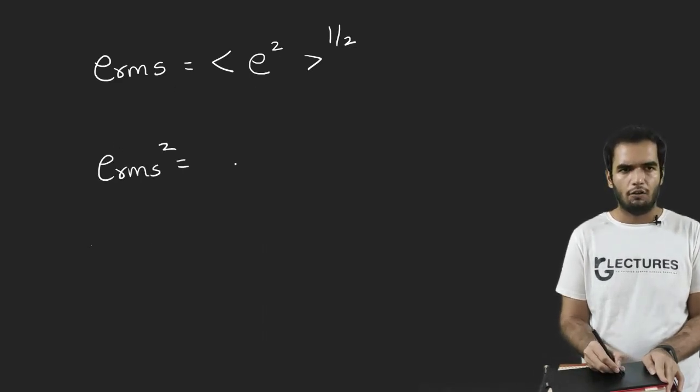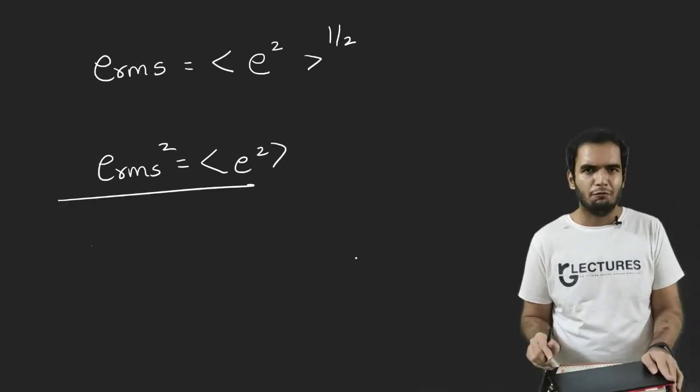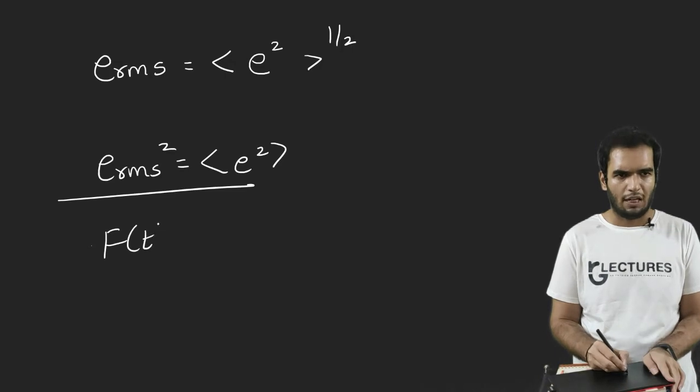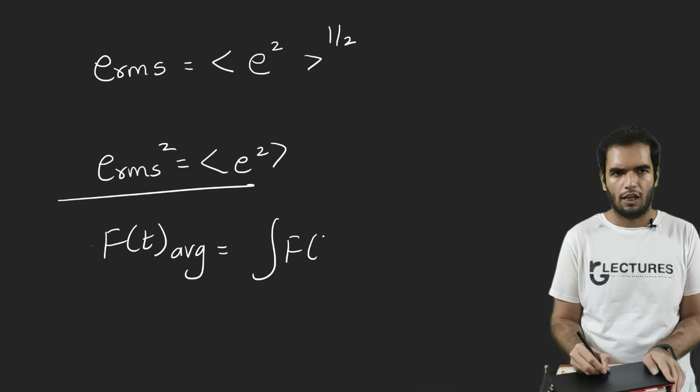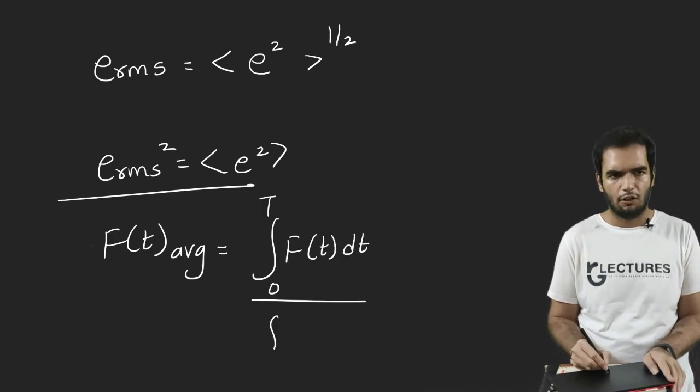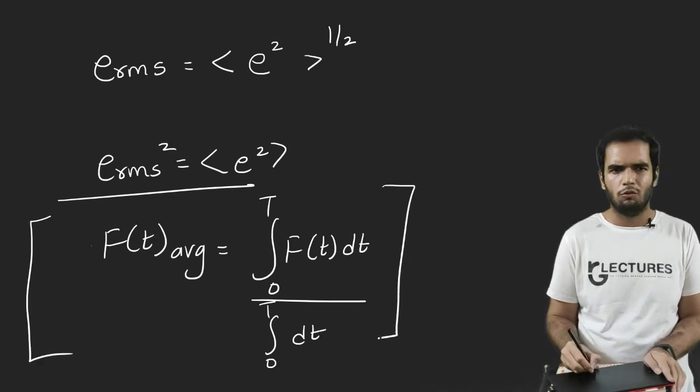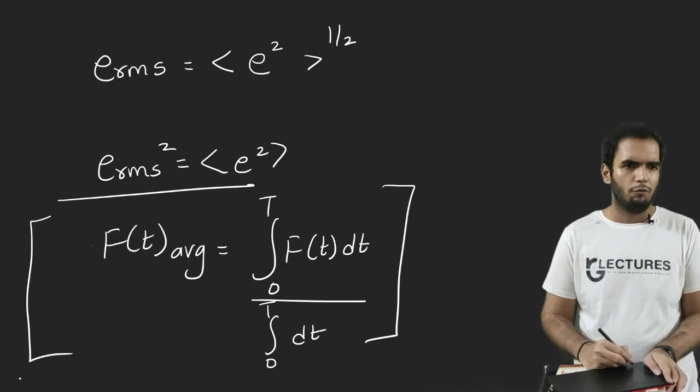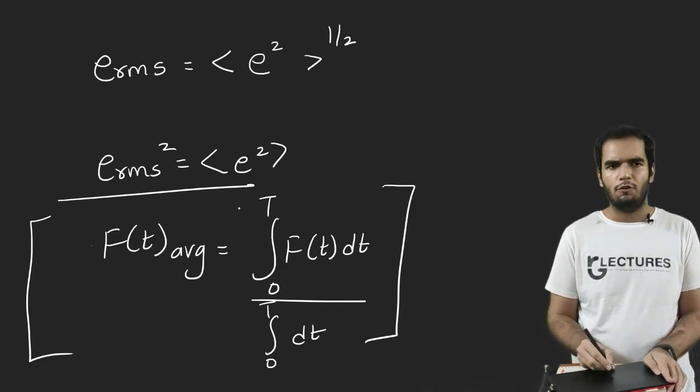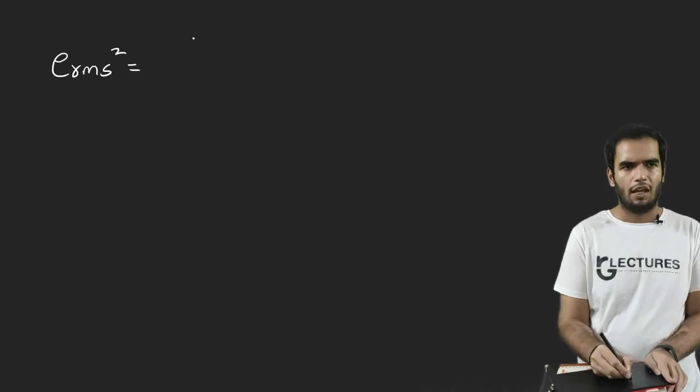Now squaring both the sides, I will get E_RMS square equals the average value of E. Now, if you want to find the average of any function which changes over time, if you want to find the average, then this is the way. You can find the average in this way. This is the way of integration. So I will do the same here. Note it down. It will be used in complete BSc. So if we want to find the average, this is the same way. I have to integrate this equation. So let me integrate. E_RMS square is the average of E from zero to T.